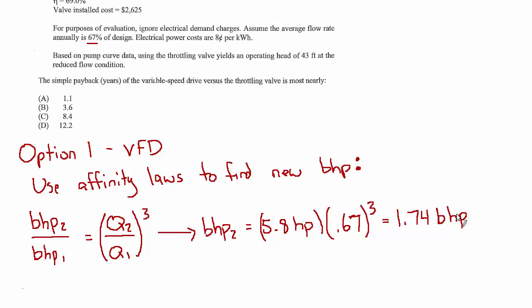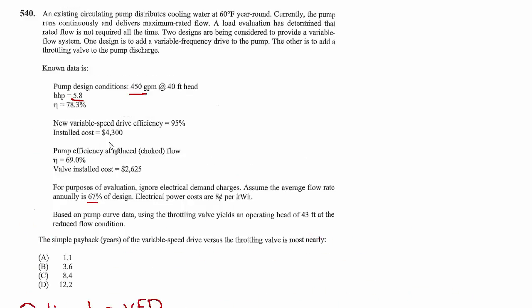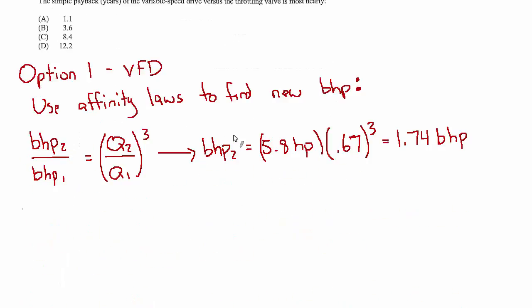Hopefully that makes sense. If not, there's a section that makes the distinction between those two efficiencies. Well, I guess in a sense we're going to include some electrical efficiency in that we've been told the variable speed drive has a 5% loss. It's only 95% efficient. So we're still on the VFD option. Let's include that. So we have the 1.74 over 0.95 gives us 1.84 horsepower. And that's on average continuous, which is quite a savings from the 5.8 where we started.